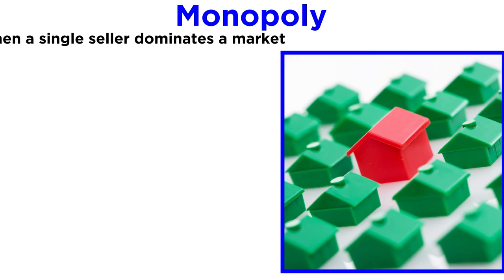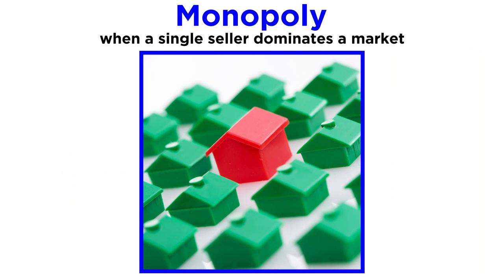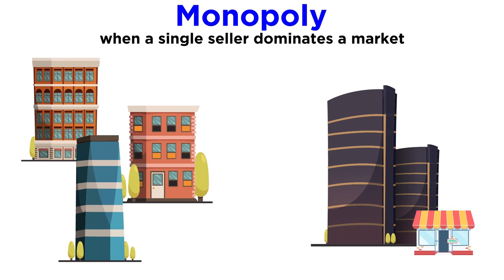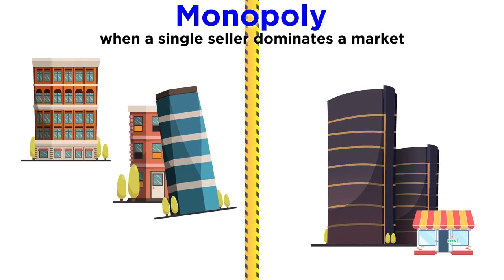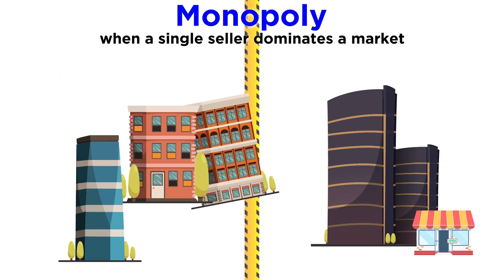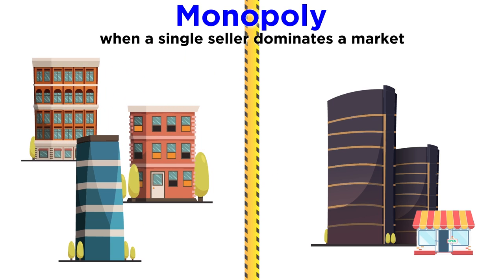To review, a monopoly is when a single seller dominates a market. This seller is also known as a monopolist. While there are many ways monopolies can arise, they primarily do so when there are barriers which prevent companies from entering a market that has a single supplier.